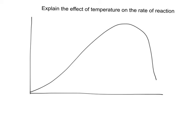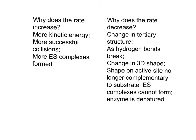As the temperature increases further, the rate starts to decrease. This is because the high kinetic energy causes hydrogen bonds to break. This changes the shape of the tertiary structure of the protein. If it changes the shape of the active site, it's no longer complementary to the substrate. The substrate can't bind, so there's fewer enzyme-substrate complexes. The enzyme has been denatured. These are the key mark points for this question.